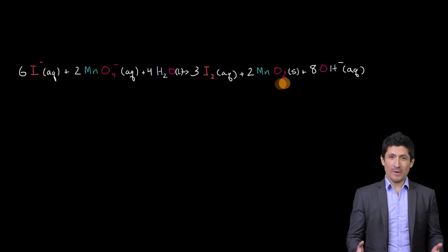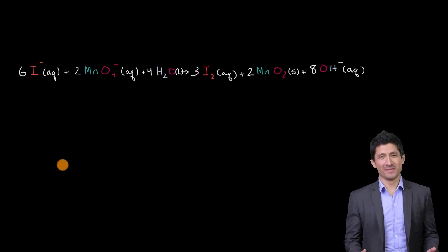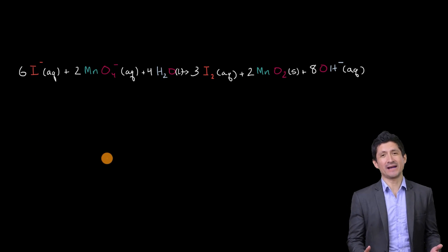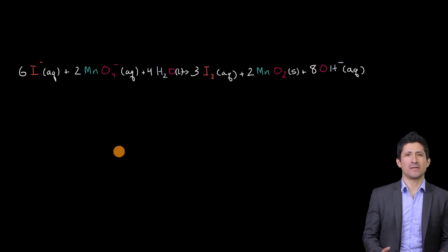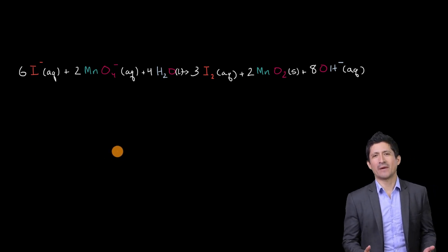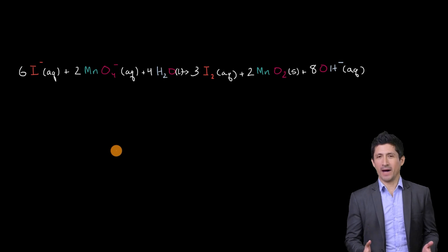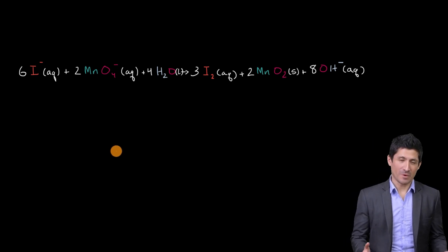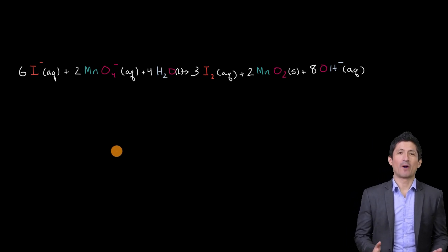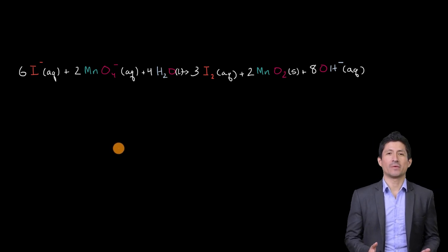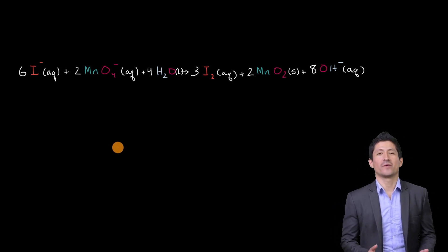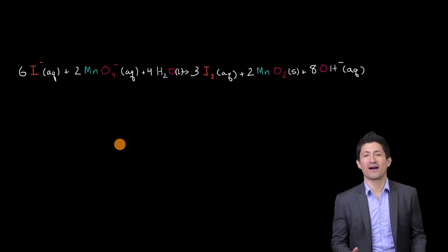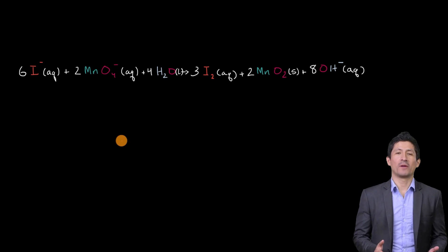What we have here is a reaction that involves iodine, manganese, oxygen, and hydrogen. What we want to do in this video is think about which of the elements are being oxidized in this reaction and which are being reduced. Pause this video and see if you can figure that out before we work through it together.